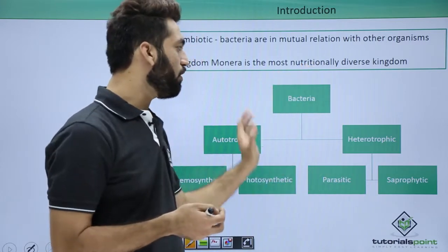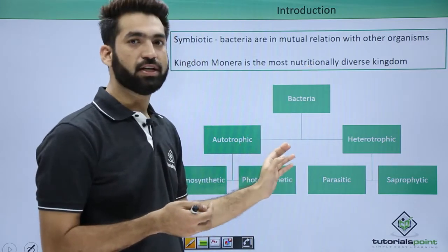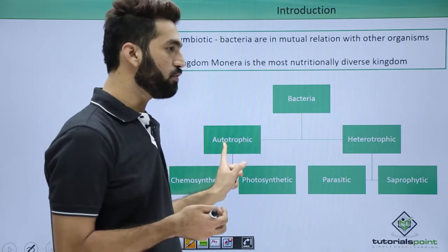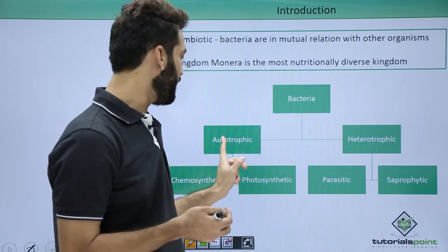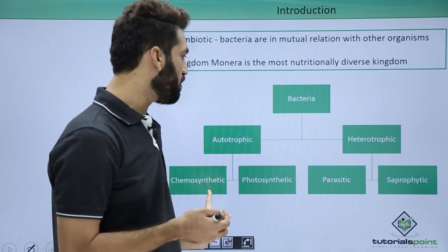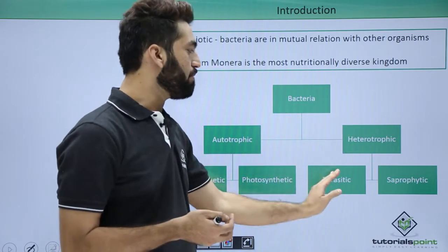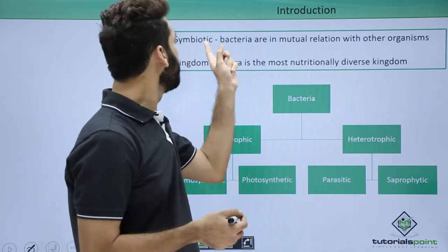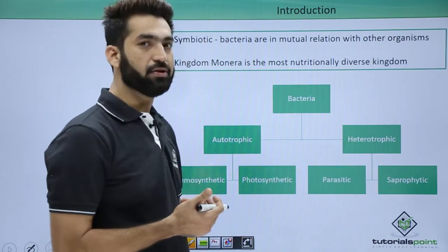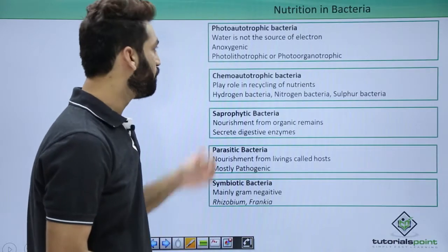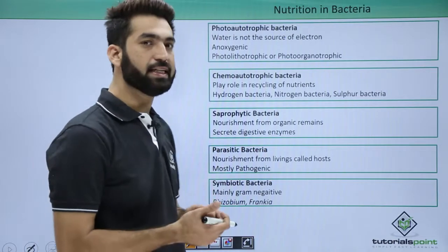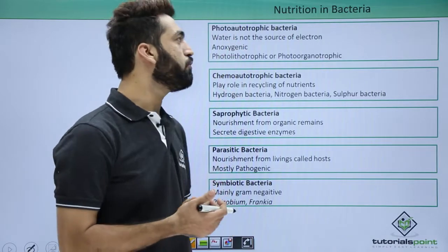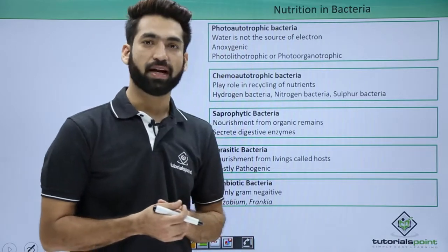All modes of nourishment are present in bacteria: it can be photo-autotrophic, chemo-autotrophic, parasitic, saprophytic, or symbiotic. Moving further into the details — what happens in photo-autotrophic bacteria?